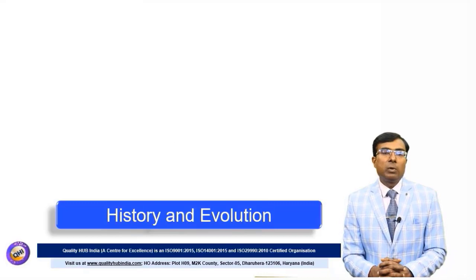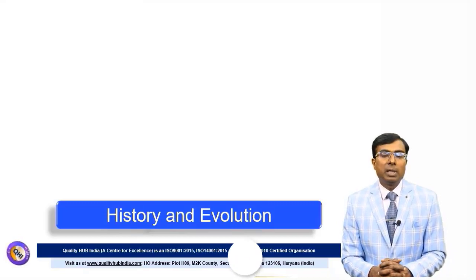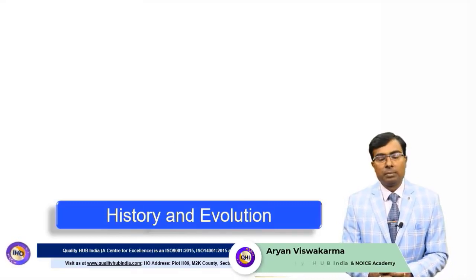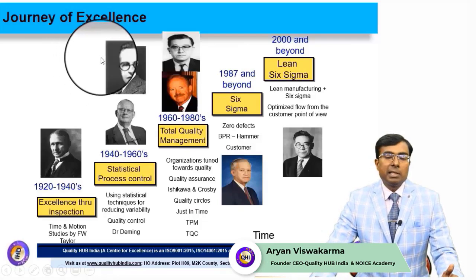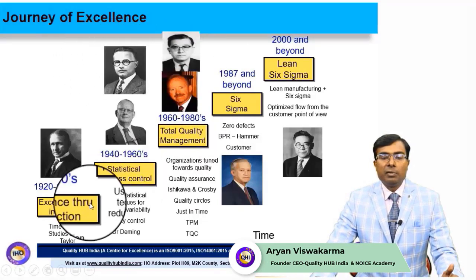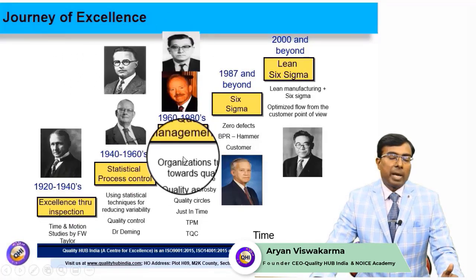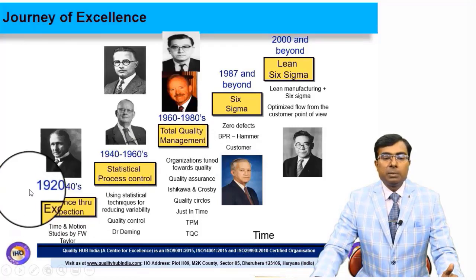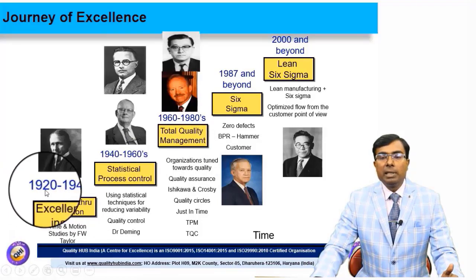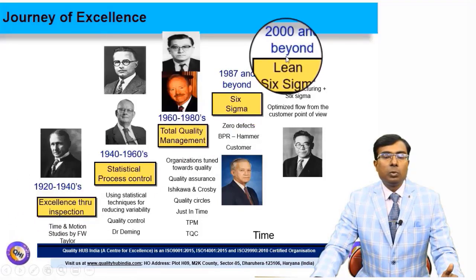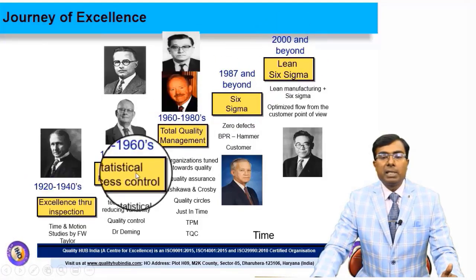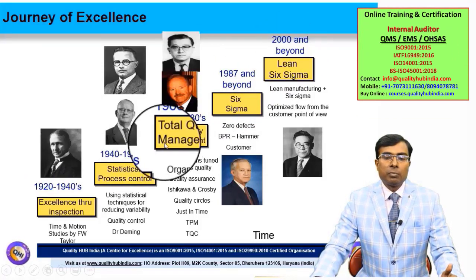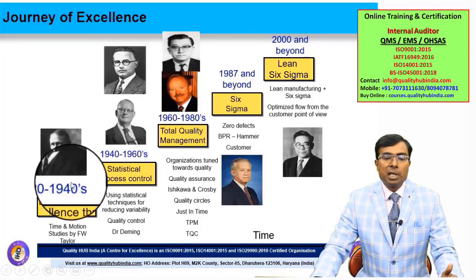In this module we are going to learn about the history and evolution of Six Sigma. We'll start by understanding the journey of excellence, which has come over the years starting from the 1920s to 2000 and beyond, covering different phases of quality evolution.